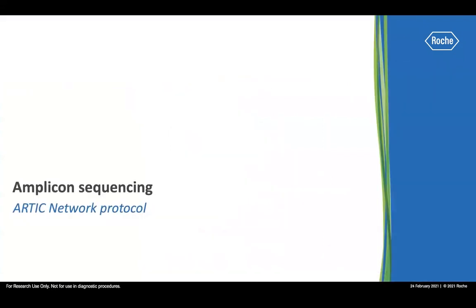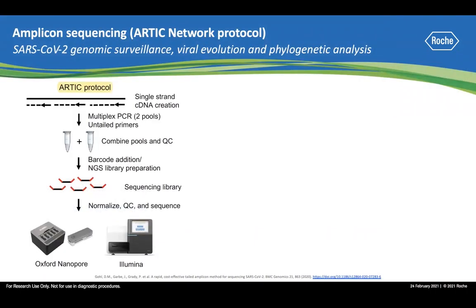The second measure I want to talk about is amplicon sequencing — more specifically, the ARTIC Network Protocol. ARTIC Network is a group that works together to develop portable sequencing solutions that can be deployed to remote regions of the world for monitoring infectious disease outbreaks. This protocol was initially developed for Oxford Nanopore instruments, but since the COVID-19 pandemic it has been adapted for use on Illumina sequencers. With the ARTIC Network Protocol, RNA is first converted into cDNA, and then 98 pairs of primers are used to generate 98 amplicons spanning the entire SARS-CoV-2 genome. The multiplex PCR is performed in two separate pools so that overlapping primers are not in the same PCR reaction.